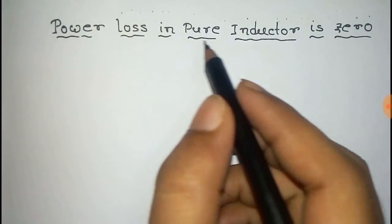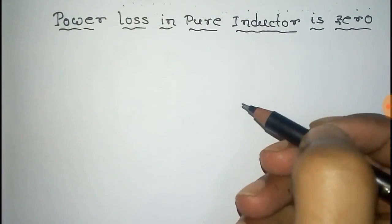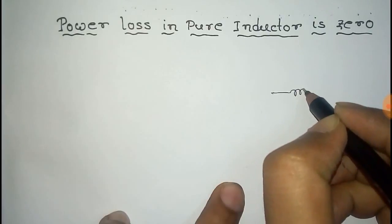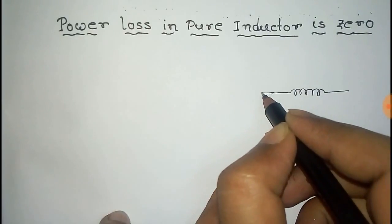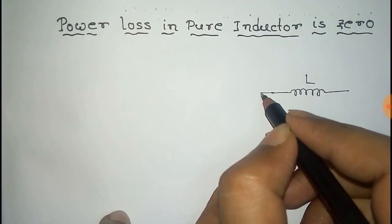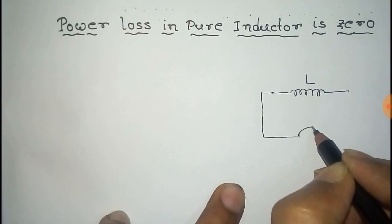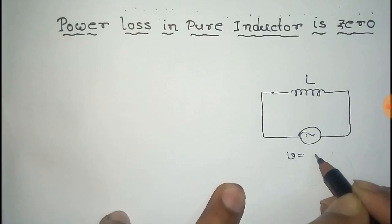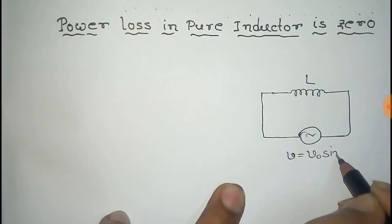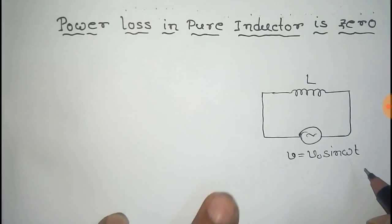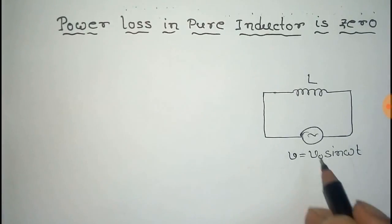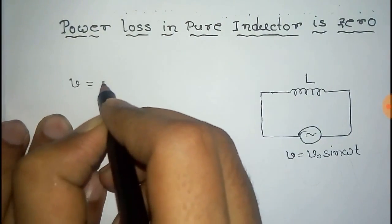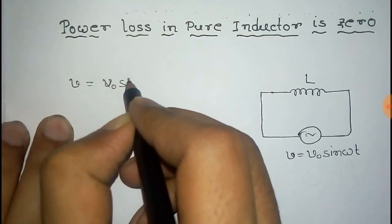We have to prove that the power loss in a pure inductor circuit is zero. For this we draw an inductor circuit with inductance L, connected to an AC power source. The voltage is V equal to V naught sine omega t, and let the current in this circuit be I. From this we can write V equal to V naught sine omega t.